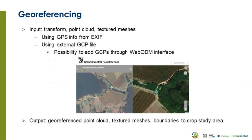In this step we are going to georeference the data. Until now it has been in a relative projection. Now we are going to transform the point cloud and the textured meshes in combination with GPS info from the EXIF information if available, or an external GCP file with coordinates. If that's not available, we can add GCPs ourselves through the WebODM interface. It has the Possum interface — an aerial photograph where we find a point that we can also see on a georeferenced Google satellite image, and by collecting multiple points in this way we can add the georeferencing information. The output of this step is a georeferenced point cloud and textured meshes, and the boundaries are cropped to the study area.